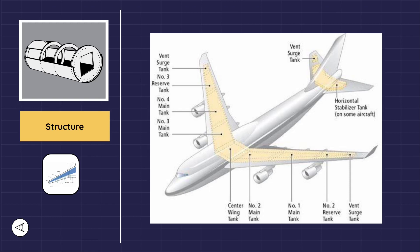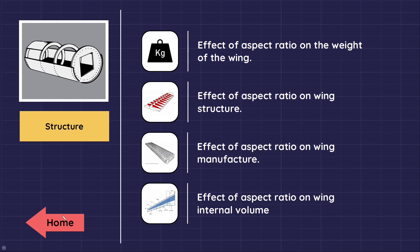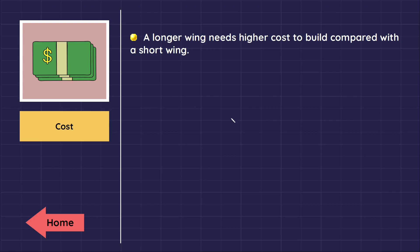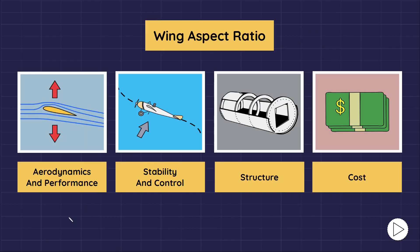Now let's look at the effect of aspect ratio on aircraft cost. A longer wing requires higher cost to build compared with a shorter wing. As noted, aspect ratio has several influences on aircraft features. For some design requirements a low aspect ratio wing is favorable, such as for fighters, while for other design requirements a high aspect ratio wing is desirable, such as for gliders.